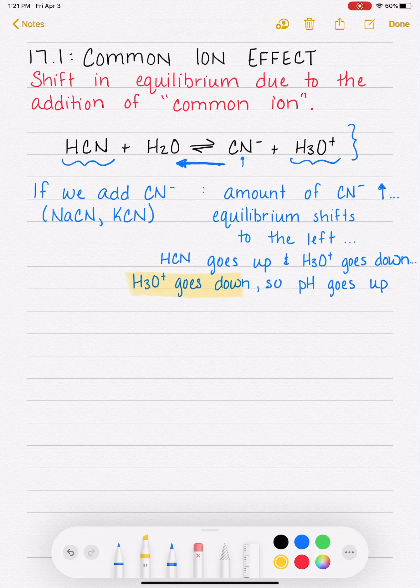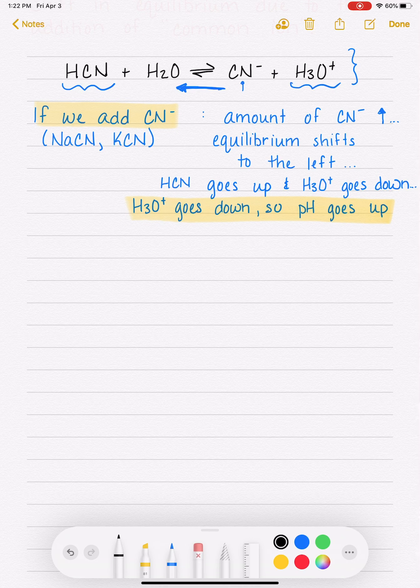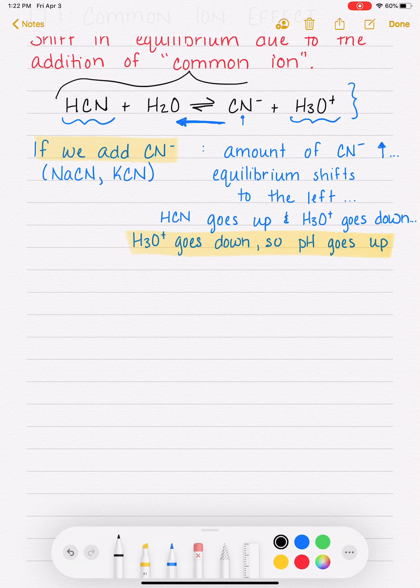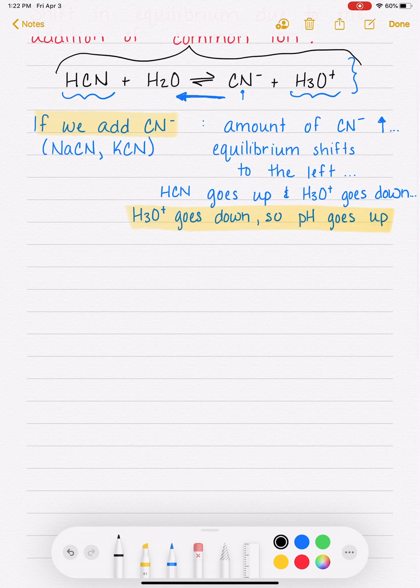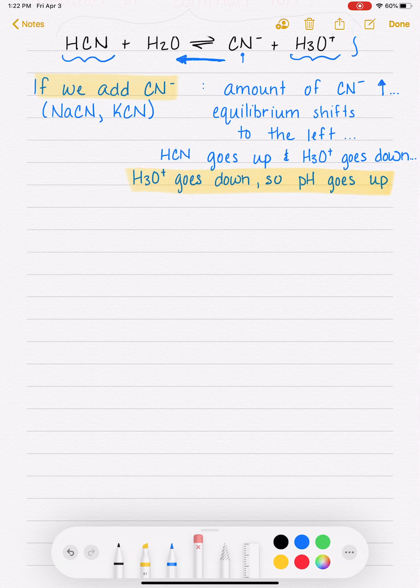So all of that thinking boils down to: if we add cyanide to this particular solution, the pH of the solution is going to go up. So what we'd like to be able to do is easily calculate - like if I add a gram of cyanide, how much is that going to change the pH? Can I quickly calculate the pH of the solution if I added some extra common ion, an ion that is also present in this equilibrium system?